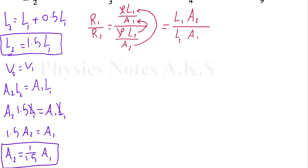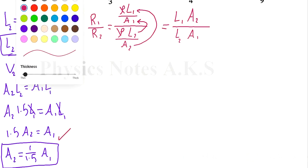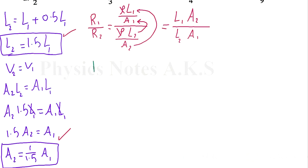Now I can substitute this and this. I'll use another color here. I'll write again R1 over R2 equals... the main here: L1 stays the same, instead of A2 I can put 1 over 1.5 A1. Down, instead of L2, I can put 1.5 multiplied by L1, multiplied by A1. I can cancel L1 with L1, A1 with A1.